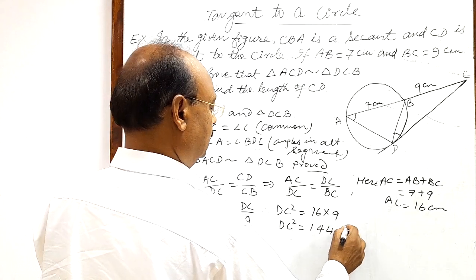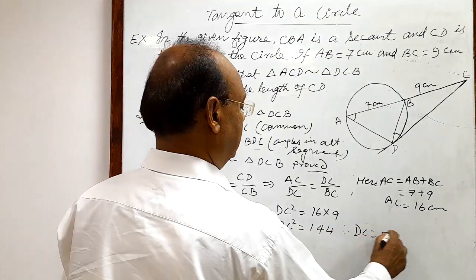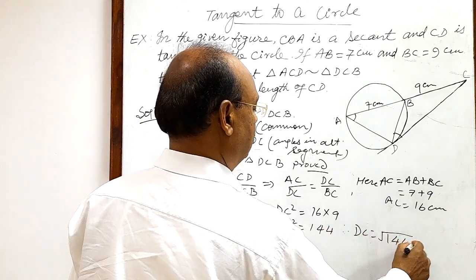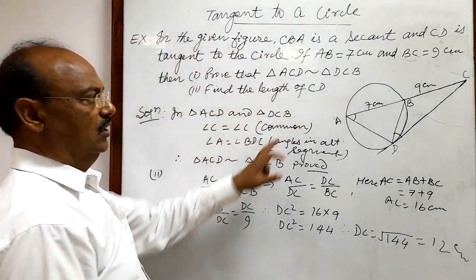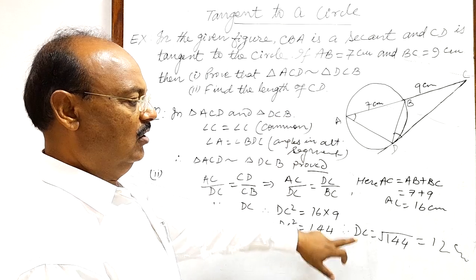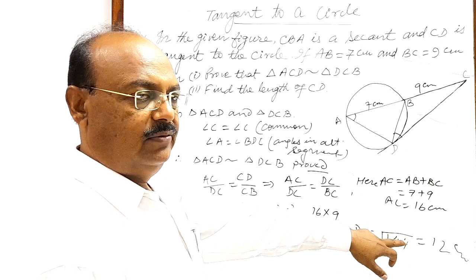Or DC² is equal to 144. Therefore DC is square root of 144, is equal to 12 centimeter. So this length CD or DC is 12 centimeter.